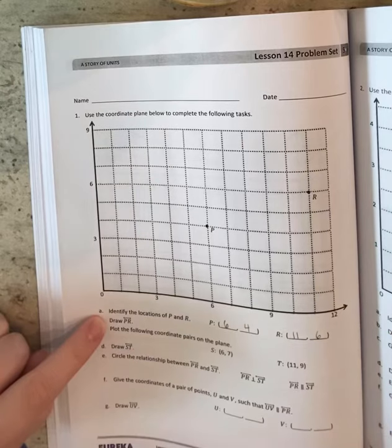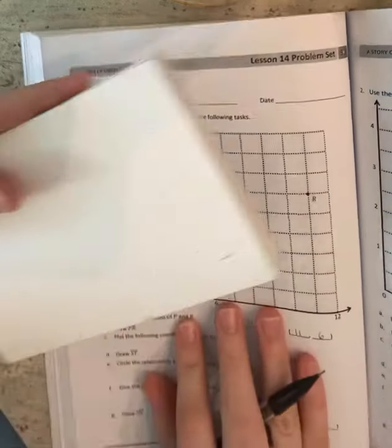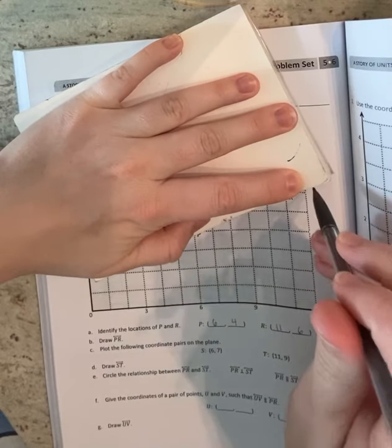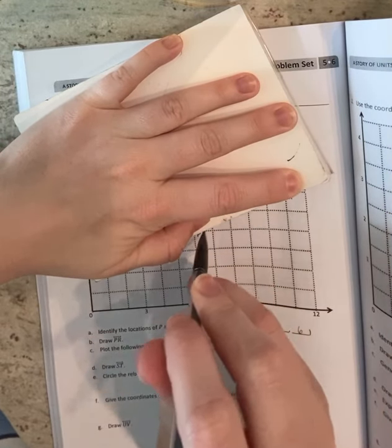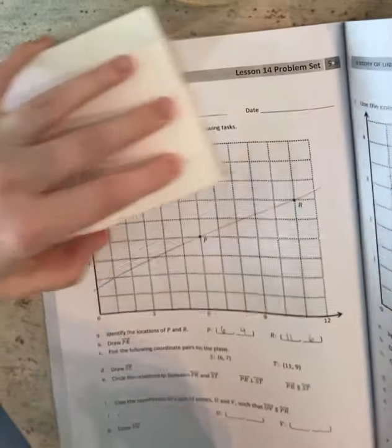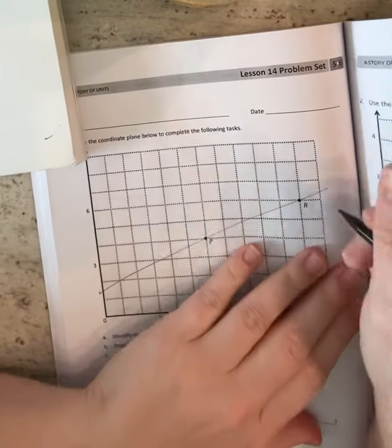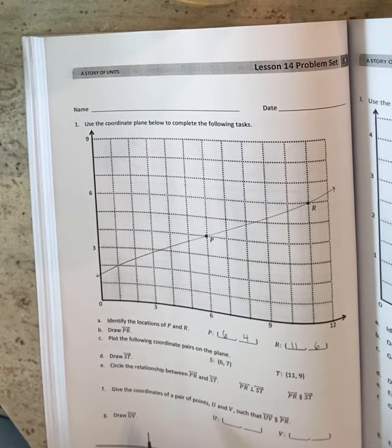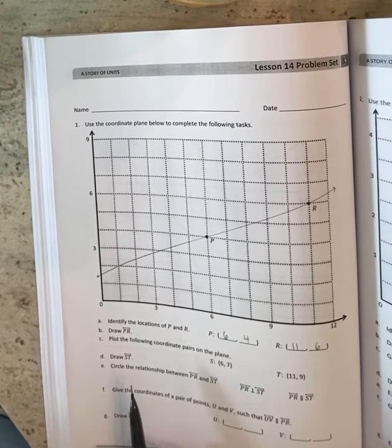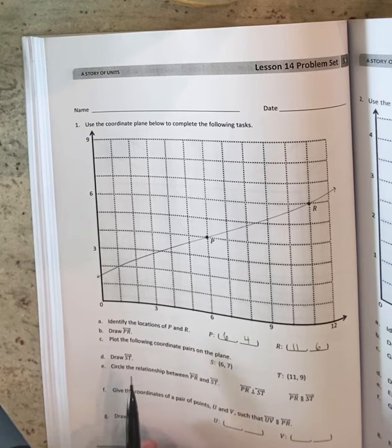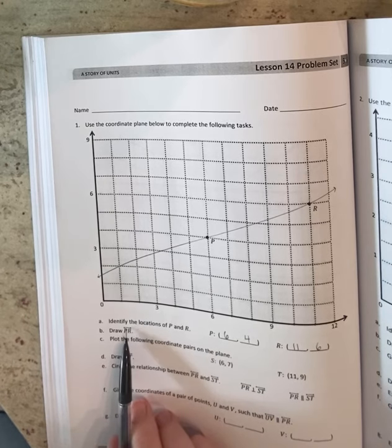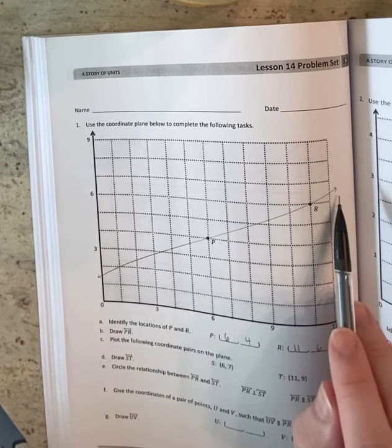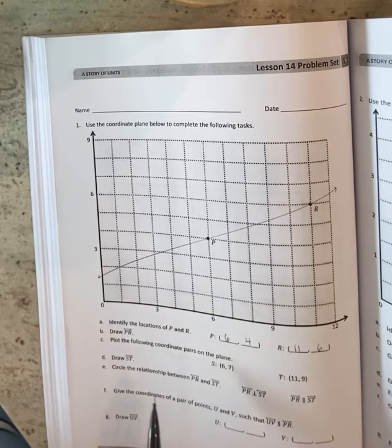Then they want us to draw PR. So you need a straight edge, draw the line for PR. And I want to point something out too. We're going to be doing different things with lines and segments and stuff. So see how it says PR with the line above it with the arrows. That means you draw it that way. There needs to be arrows at the end. All right.